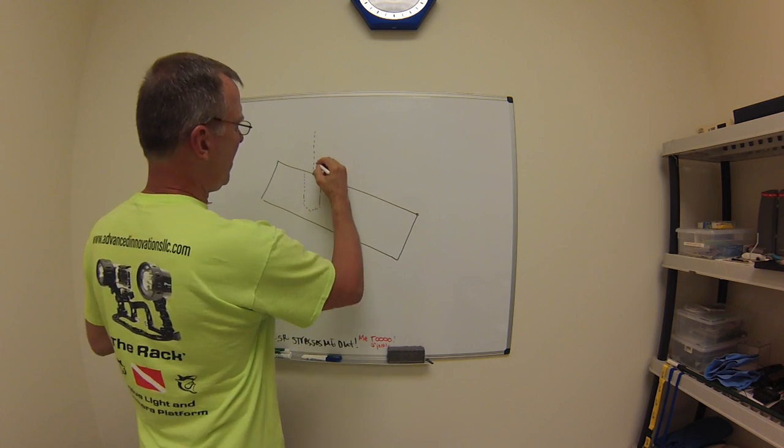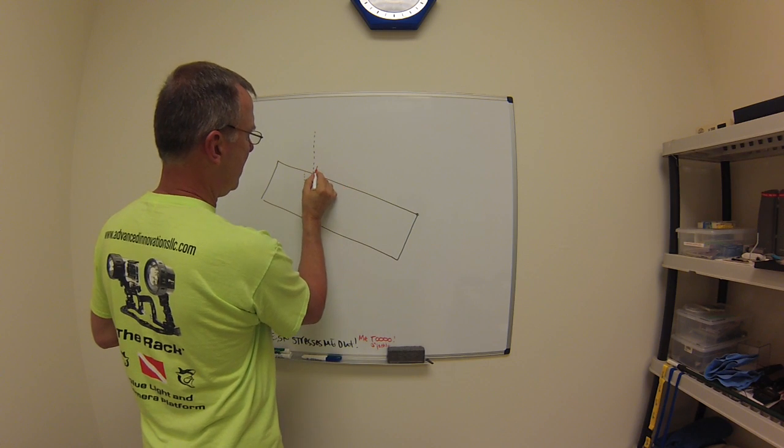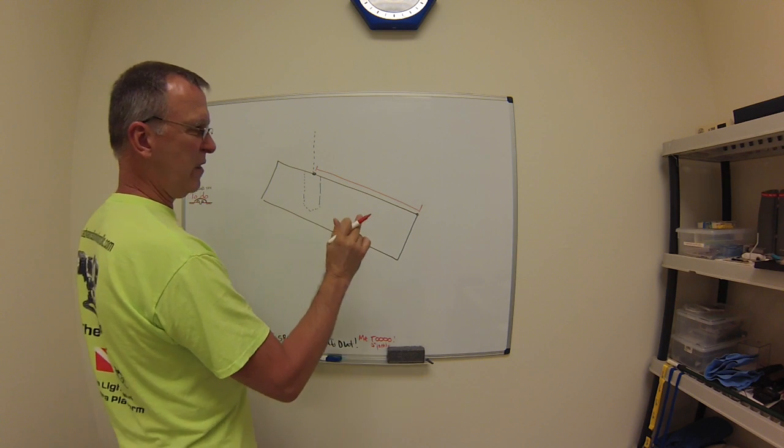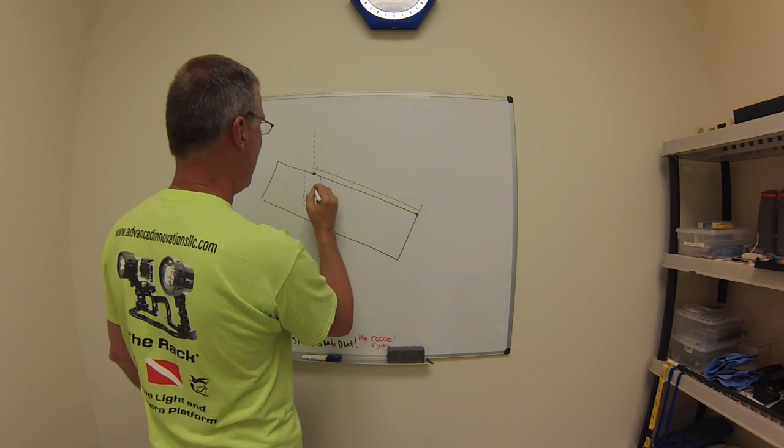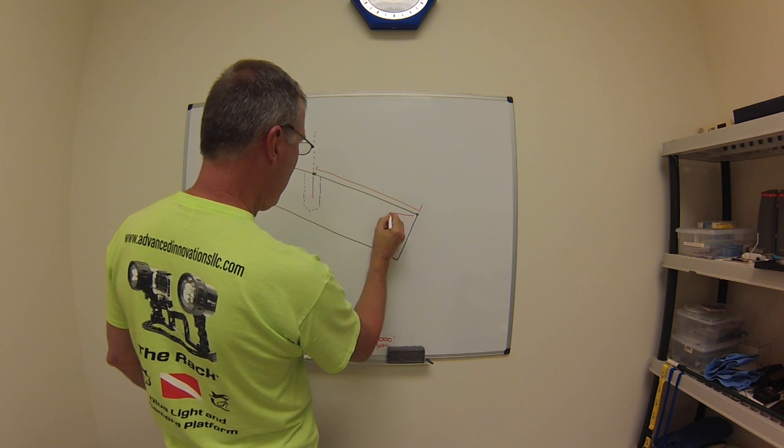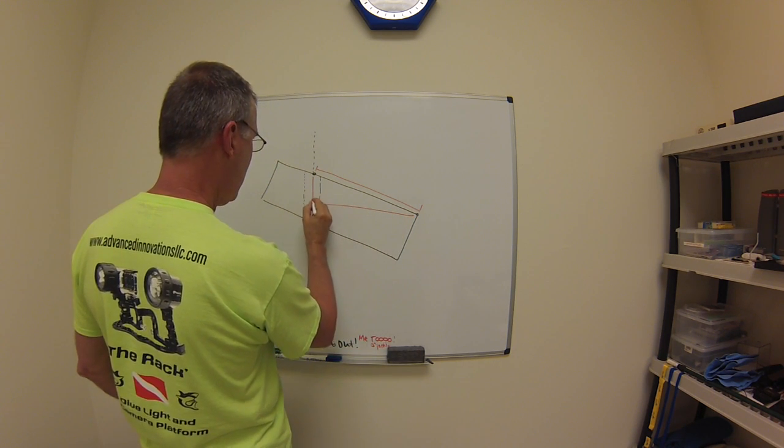This is the dimension given on the print right here. This is the triangle that you are going to need to figure out. Right there.